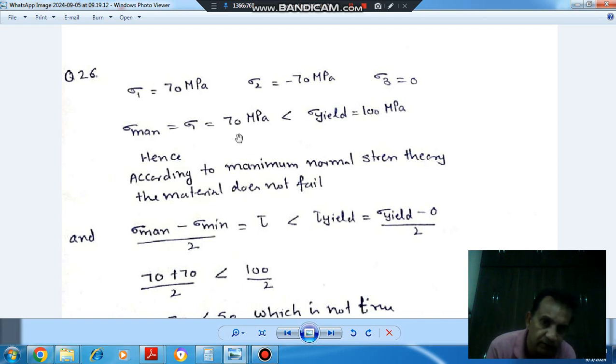And according to normal stress theory, the sigma max should be less than sigma yield, 100 MPa. So this is satisfied. So according to maximum normal stress theory, the material will not fail.